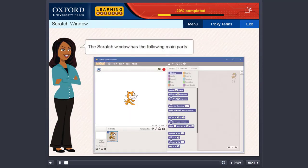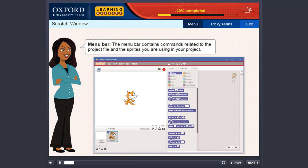The Scratch Window has the following main parts. Menu Bar: The Menu Bar contains commands related to the project file and the sprites you are using in your project.